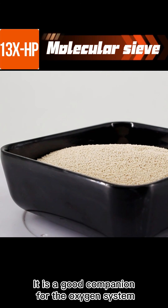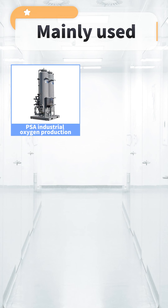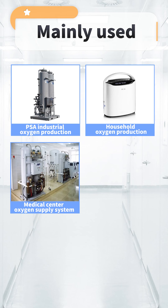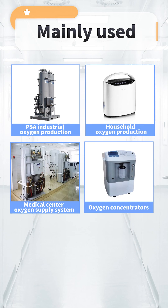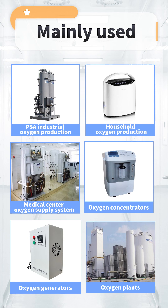It is a good sieve for the oxygen system. 13X-HP molecular sieve is mainly used in PSA industrial oxygen production, household oxygen production, medical center oxygen supply systems, and various oxygen concentrators, oxygen generators, and oxygen plants.